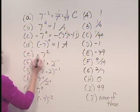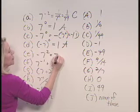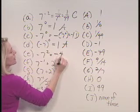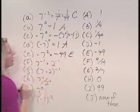For e, negative 7 squared, similar to c, this would be the opposite of whatever 7 squared is. That's 49. Negative 49 would be selection e.